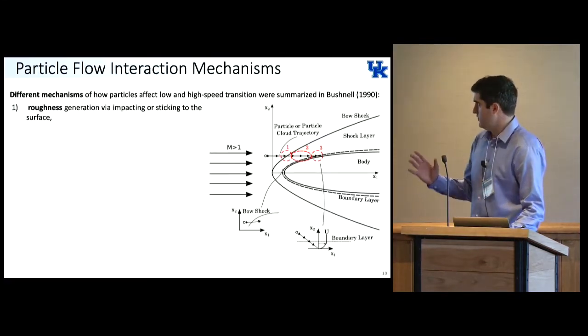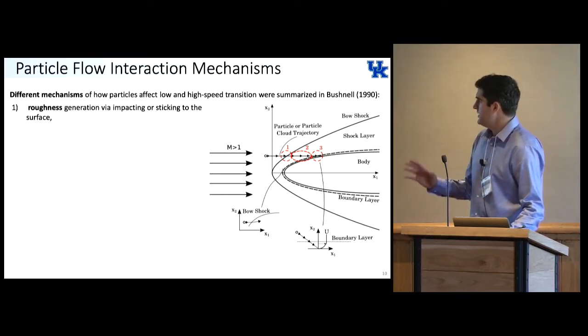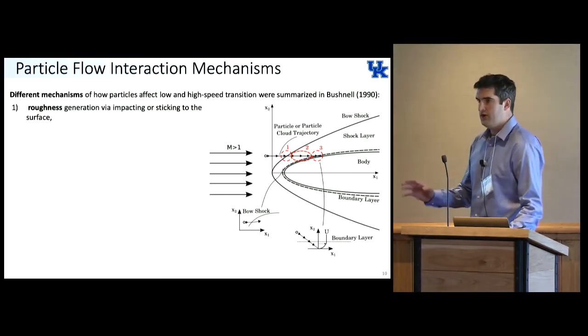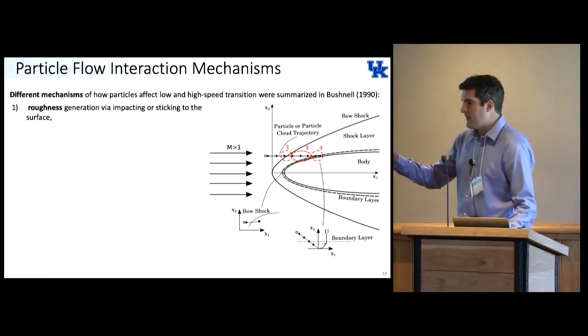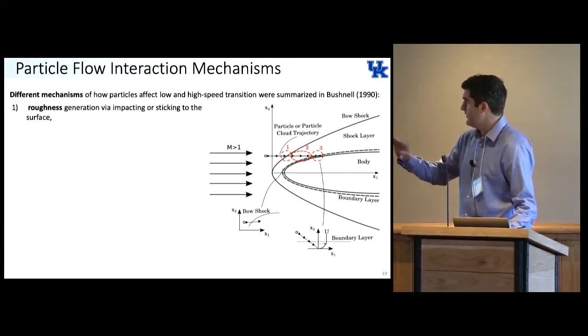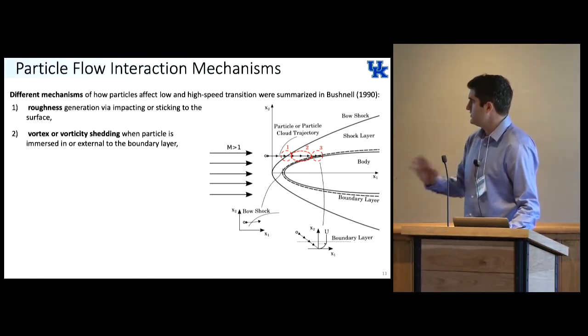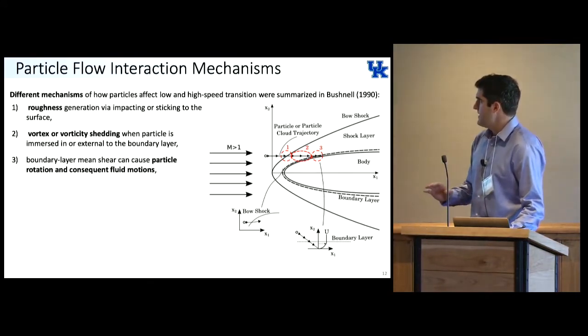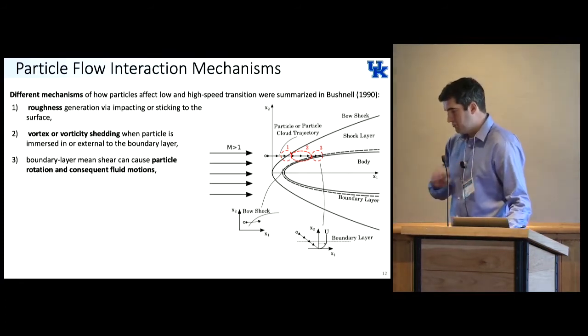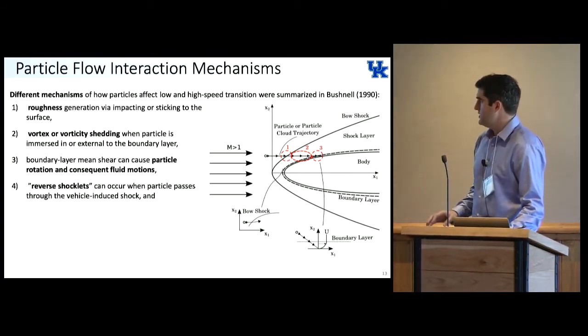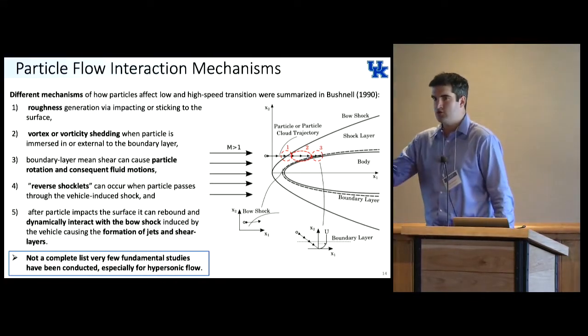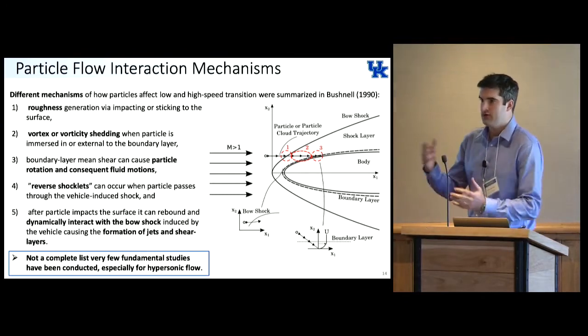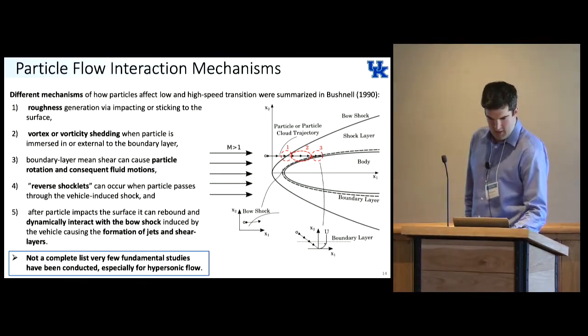Bushnell in 1990 came up with a few of the effects that these particles can have. You can have damage to the vehicle and then you're left with the divot causing roughness, unsteady flow phenomena. The particle can introduce new motions into the fluid, reverse shocklets. And after the particle rebounds off the surface, then it can be interacting with the flow field. This is not our complete list.